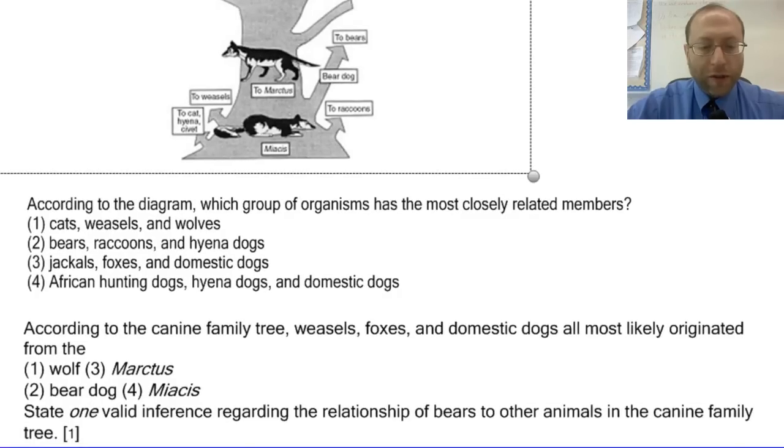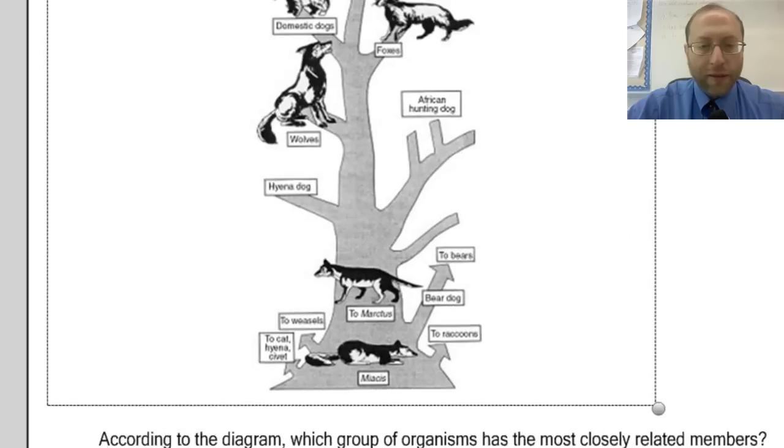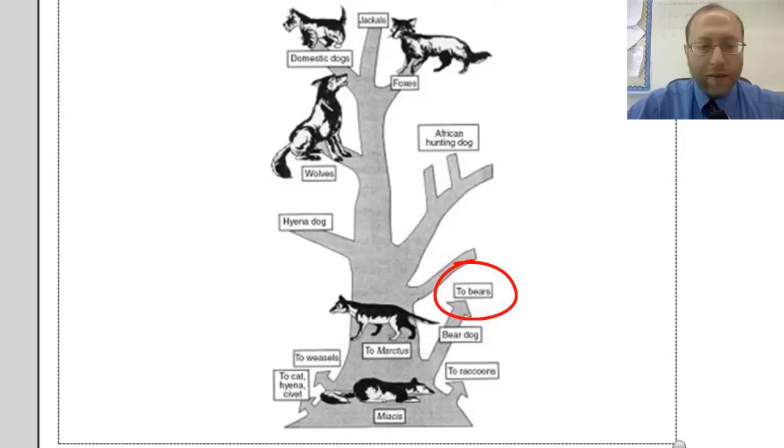State one valid inference regarding the relationship of bears to the other animals of the canine family tree. For bears, I could say that they are related to the canine family tree. I could say that they are more closely related to raccoons than they are to wolves or to hyena dogs. I could also say that bears are descended from bear dogs since bear dogs are on the same branch, but further up.